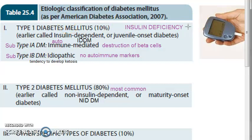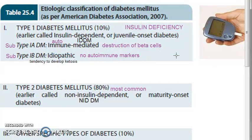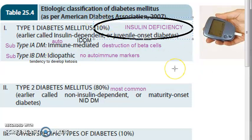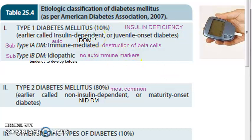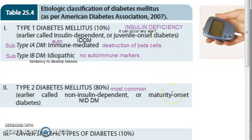This is an etiological classification, meaning the cause is the major criteria for classification. In type 1a the cause is autoimmune mediated destruction of beta cells, and in type 1b the cause is idiopathic. Earlier, type 1 was called juvenile onset diabetes, but that name is no longer used because autoimmune mediated destruction of beta cells can happen at any age.